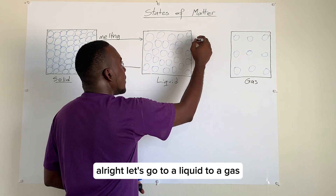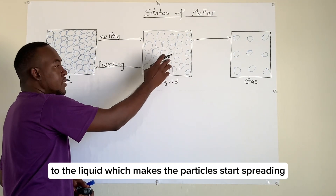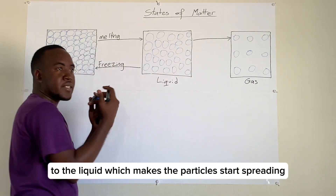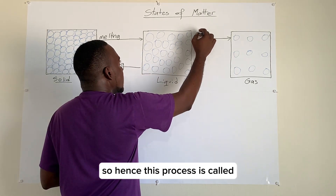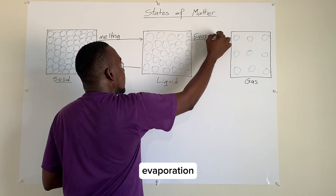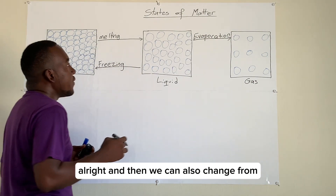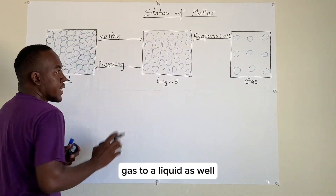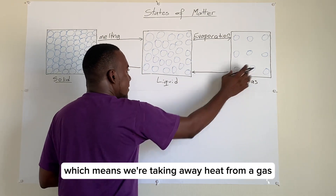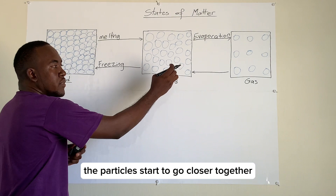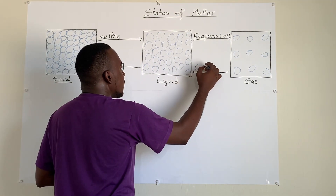Let's go to a liquid to a gas. Liquid to gas means that we're applying heat to the liquid, which makes the particles start spreading out because the bonds are broken. This process is called evaporation. We can also change from gas to a liquid, which means we're taking away heat from a gas so the particles start to come closer together, building stronger bonds. This process is called condensation.